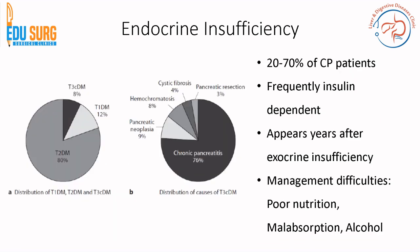Regarding endocrine insufficiency — Type 3C diabetes or pancreatogenic diabetes — it comprises only 8% of the total diabetic patient population. However, 76% of Type 3C diabetes cases are caused by chronic pancreatitis, and around 70% of chronic pancreatitis patients will develop endocrine insufficiency at some point. These patients are frequently insulin-dependent, and this insufficiency appears years after exocrine insufficiency. Management is challenging due to inherent malnutrition, malabsorption, and the fact that alcohol — the most common cause of chronic pancreatitis — also interferes with treatment.